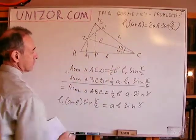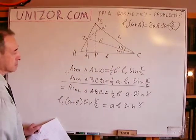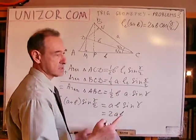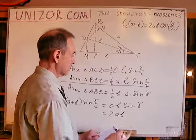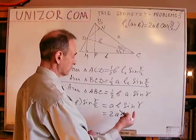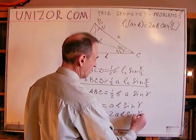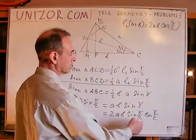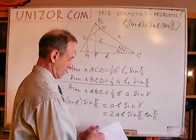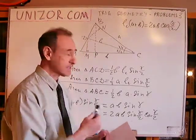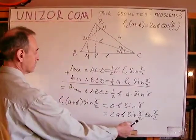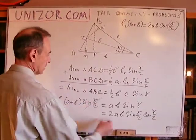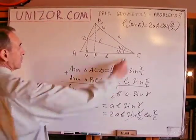Now, sine gamma equals 2 sine(gamma over 2) cosine(gamma over 2) — that's the double-angle formula, gamma over 2 plus gamma over 2. So LC times (A plus B) times sine(gamma over 2) equals AB times 2 sine(gamma over 2) cosine(gamma over 2). We can reduce both sides by sine(gamma over 2), and we get exactly LC(A+B) = 2AB cosine(gamma over 2). That's it.